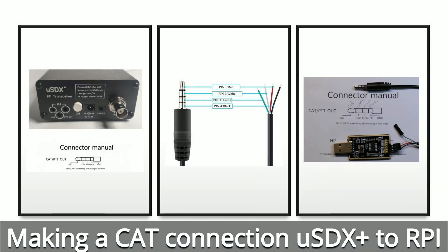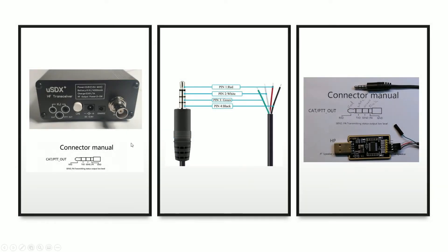Next I needed to make the physical connector from the micro SDX transceiver to the Raspberry Pi through the CAT interface. Here's the back of the transceiver — the CAT interface uses an eighth-inch four-pole plug, typically seen on microphones. Receive on the transceiver side is on the tip, transmit is next, and ground is at the bottom; we don't use the middle pin. I got a plug off Amazon with pre-tinned ends and I'll put the link below.